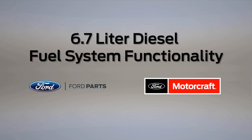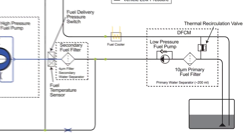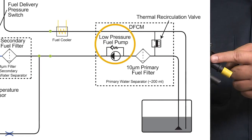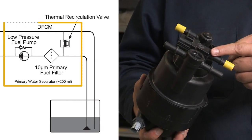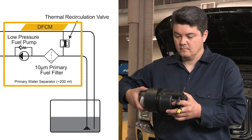First, let's take a look at how the 6.7 liter diesel fuel filters work. Using the low-pressure fuel pump located inside the diesel fuel condition module or DFCM,